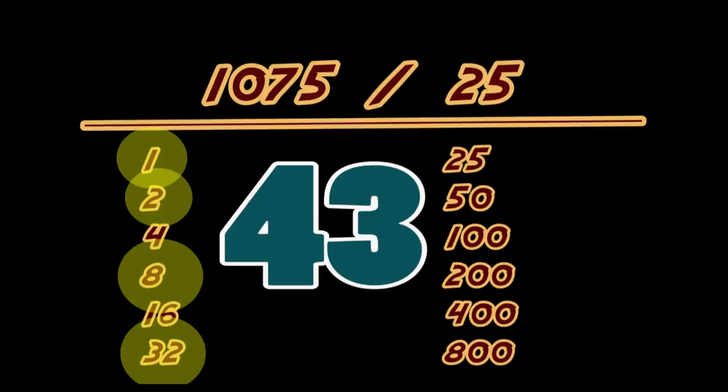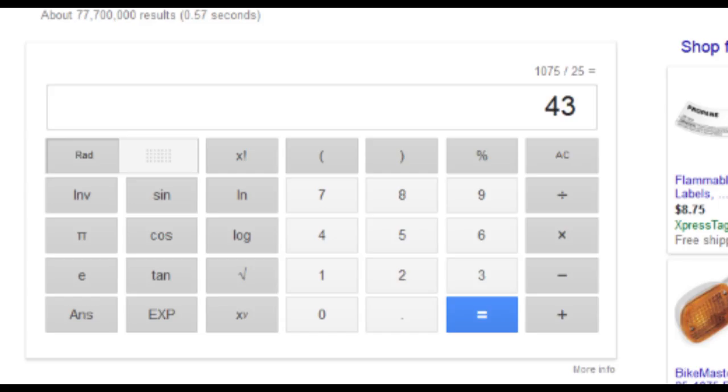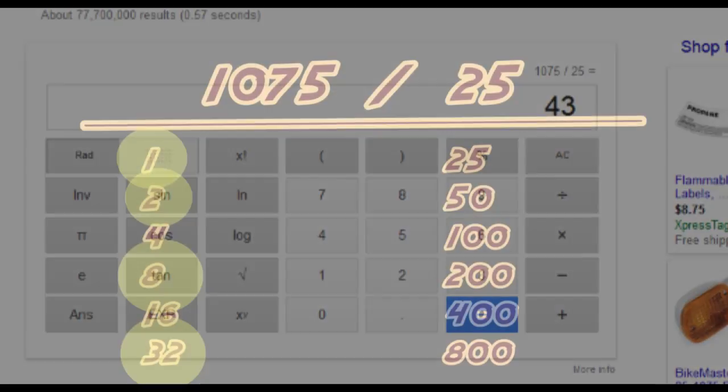Now, of course, we could check that on a calculator, but we don't really need to, because we know it's going to be 43. No long division. No borrowing. No carrying. None of that is necessary.